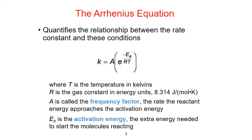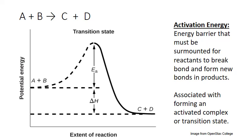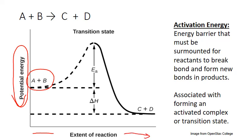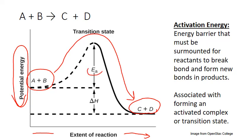Let's first look at the activation energy in more detail. This diagram is known as an energy diagram, and it gives you a nice visual for the concept of activation energy. Here we have the potential energy of our reactants or products on the y-axis. On the x-axis is a measure of how far that reaction has progressed, with points farther to the left associated with our reactants A and B, and points farther to the right associated with the formation of our products C and D. Almost every reaction has an energy barrier to overcome to progress from reactants to products. This barrier is the amount of energy required to start breaking chemical bonds in the reactants and start forming chemical bonds in the products. It's associated with the formation of an activated complex or transition state, and the height of the barrier is the activation energy.